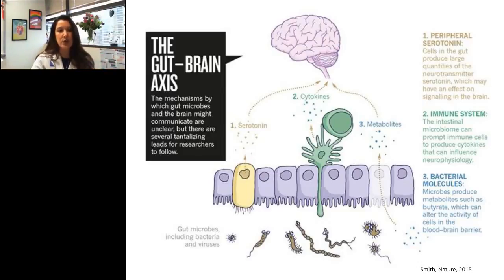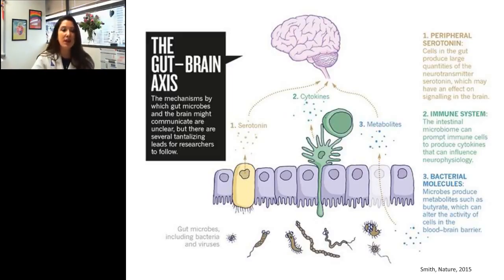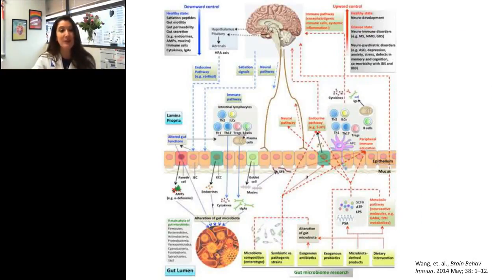There are three critical considerations regarding crosstalk between the gut and the brain. First, 95% of the body's serotonin is produced within the gut. Second, the gut microbiome can impact the immune system by eliciting cytokine production, which influences neurophysiology. Third, active metabolites produced by specific gut microbiomes can affect activity at the blood-brain barrier. Communication along this axis is bi-directional, so changes on either end will induce changes throughout a variety of pathways.